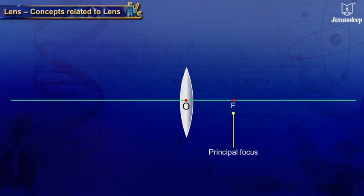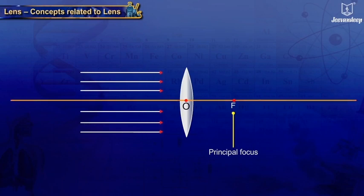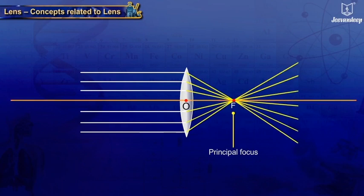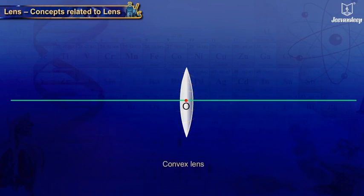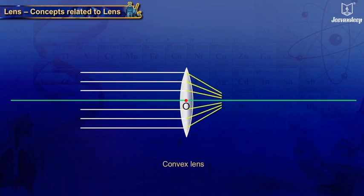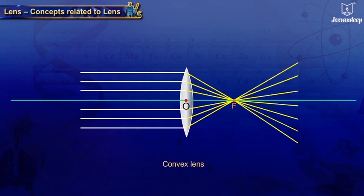The principal focus, represented by F, of a lens: when several rays of light parallel to the principal axis are incident on a lens, they converge at a point or appear to diverge from a point on the principal axis. This point is called the principal focus. In a convex lens, rays parallel to the principal axis converge at the focus. A convex lens has two principal foci, F1 and F2.